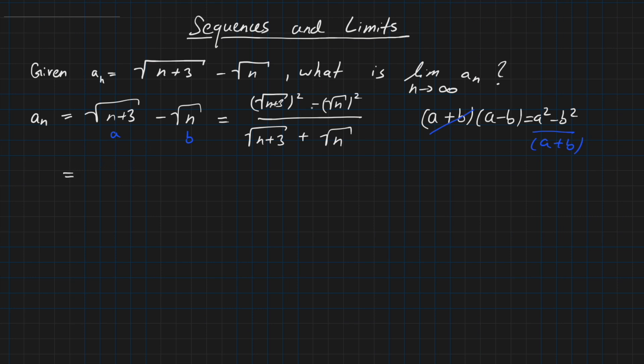So we have here cancellation of root and square to n plus 3, and then the same here minus n, and then the denominator remains the same, it's just root of n plus 3 plus root of n, and then we can cancel out this n here. So we have just 3 over root of n plus 3 plus root of n.